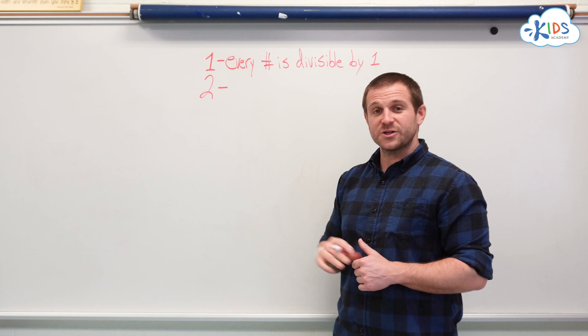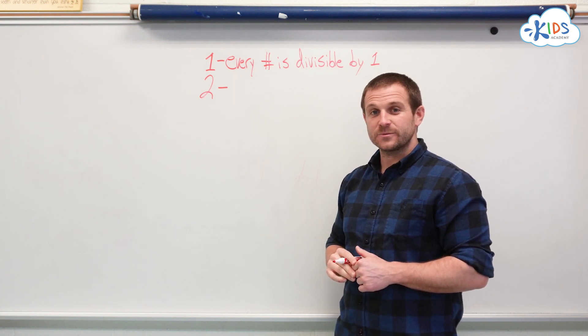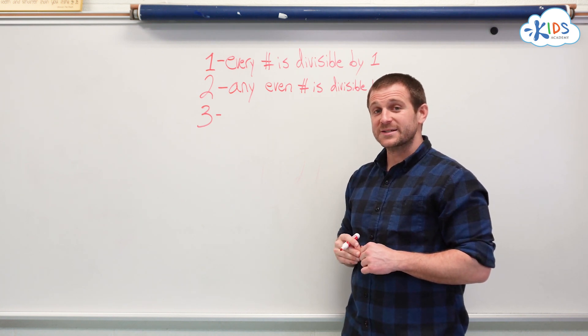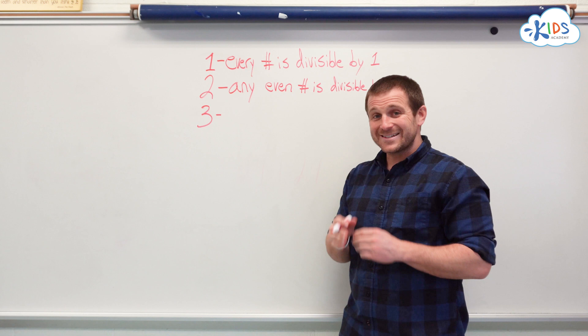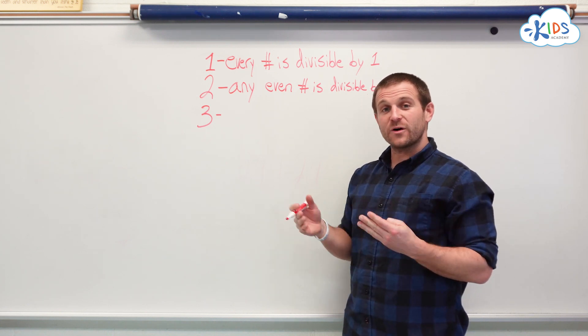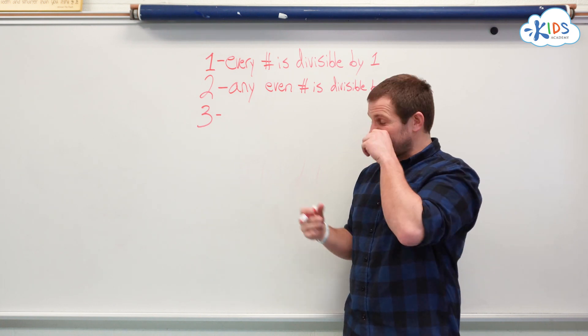The strategy for 2 is also pretty simple. Any even number is divisible by 2. 3 is next, and this is where the strategies start to get a little bit more complex. The strategy for 3 is adding up all the digits in the number, and if your sum of all those digits is divisible by 3 itself, then the number is divisible by 3.